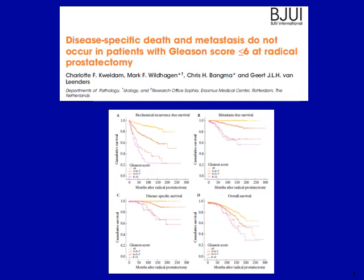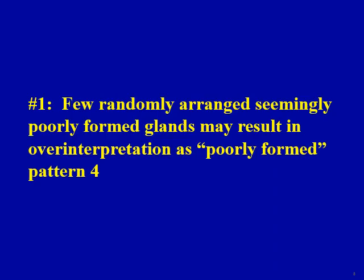Let me share with you some of the common pitfalls that I see in prostate biopsy practice that result in over-interpretation of pattern 3 as 4. The first two top pitfalls are related to the poorly formed glands criteria. Pathologists often over-interpret a few randomly arranged, seemingly poorly formed glands as Gleason pattern 4 poorly formed glands.